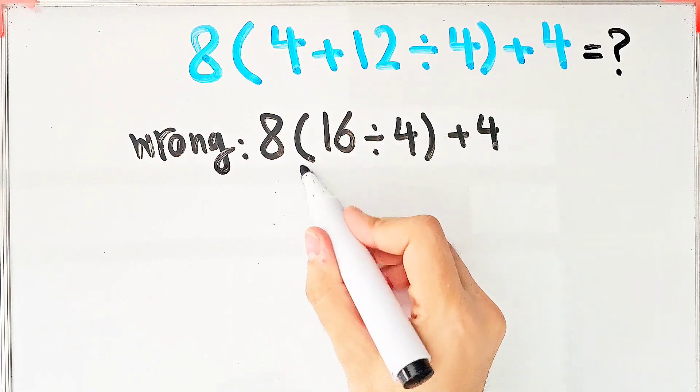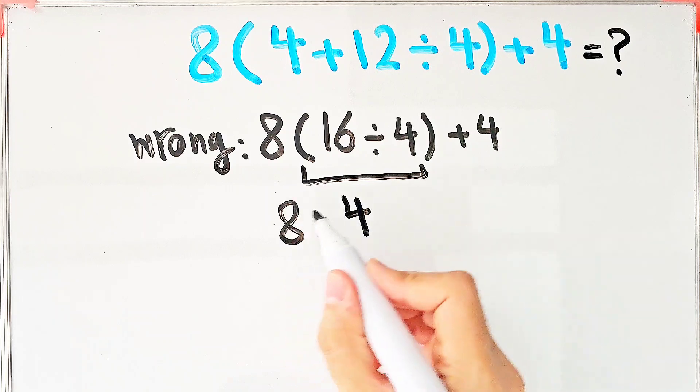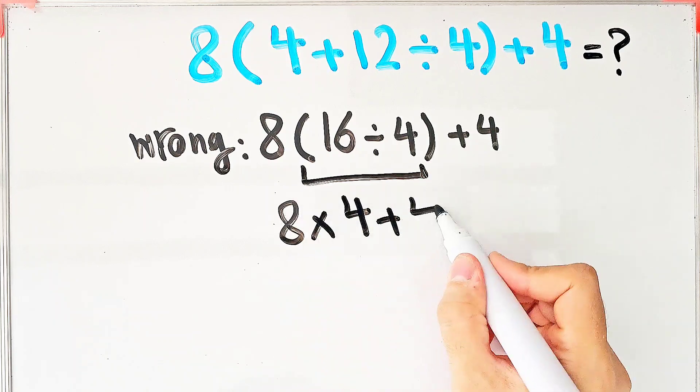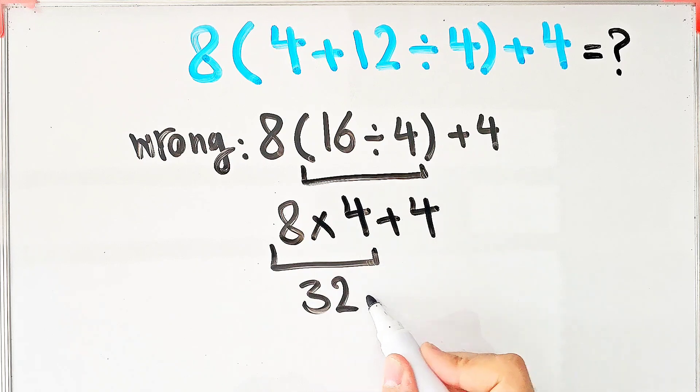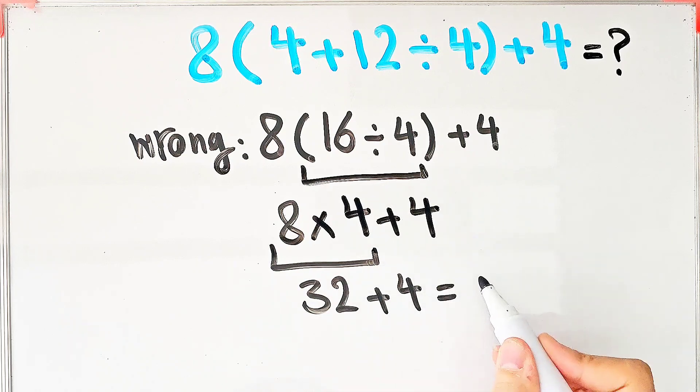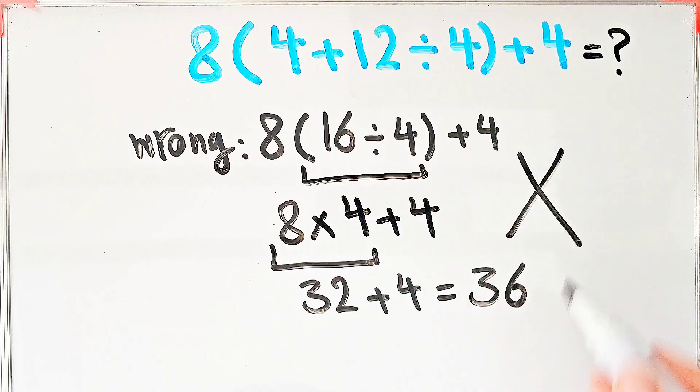Sixteen divided by four equals four. Eight times four, then plus four. Eight times four equals thirty-two, and thirty-two plus four equals thirty-six. They say the final answer of this question equals thirty-six, but this answer is wrong.